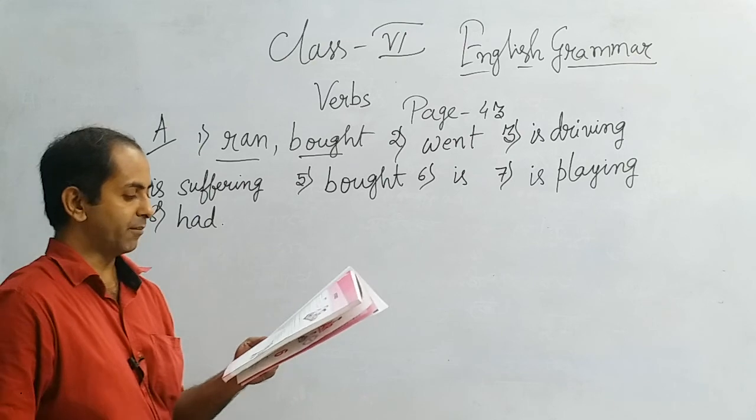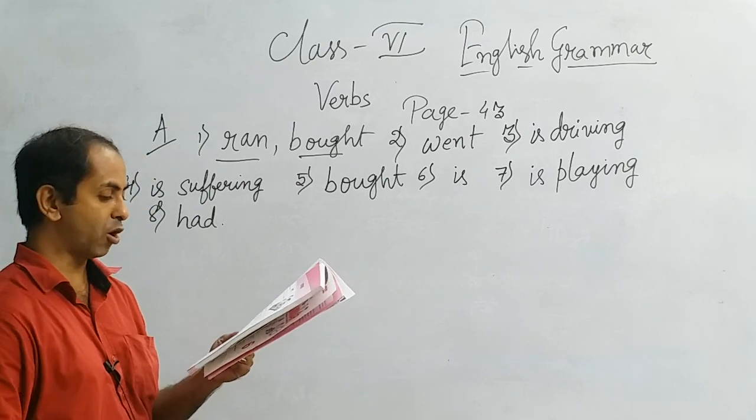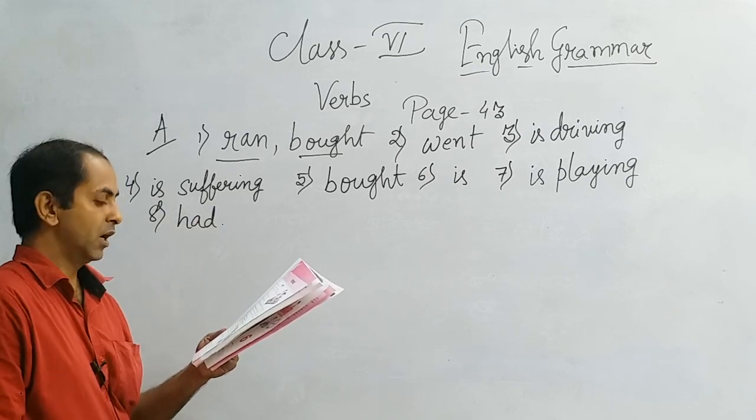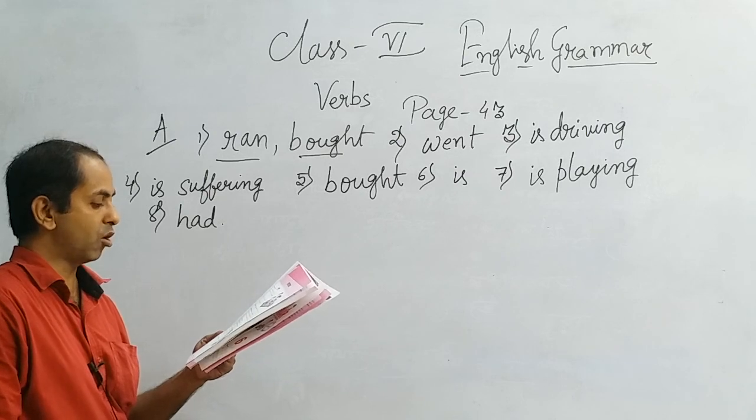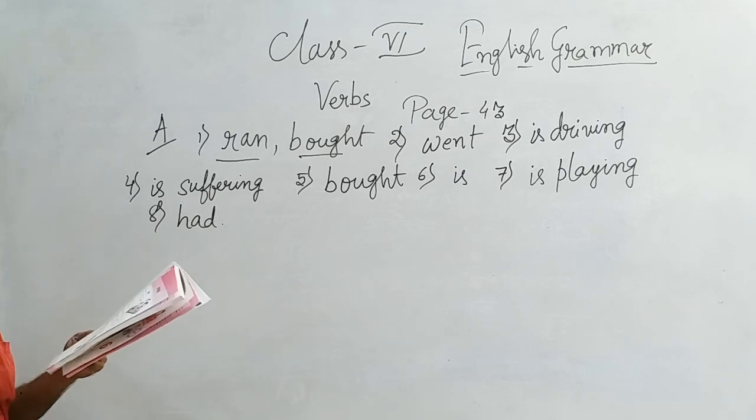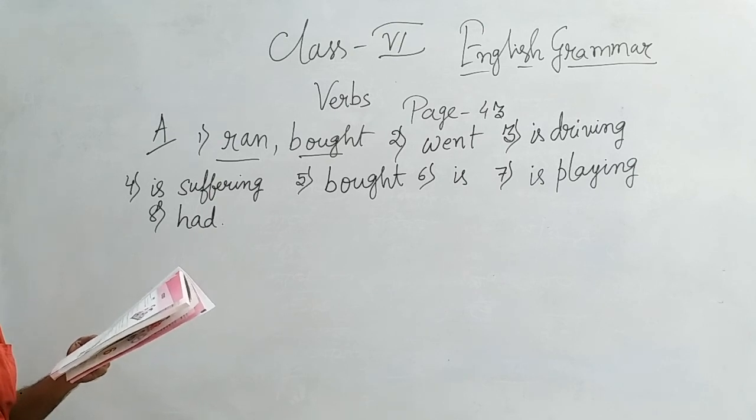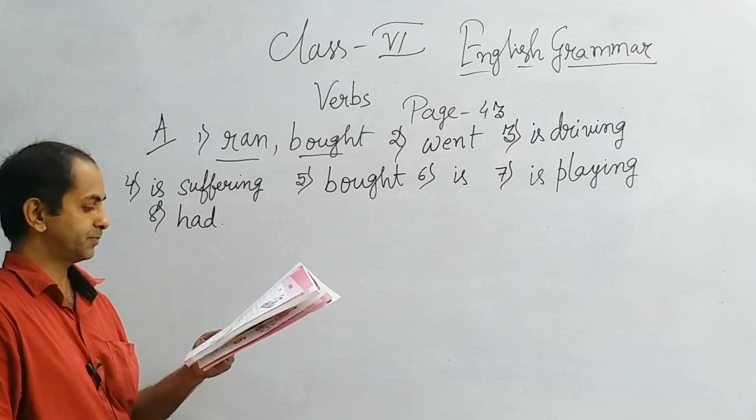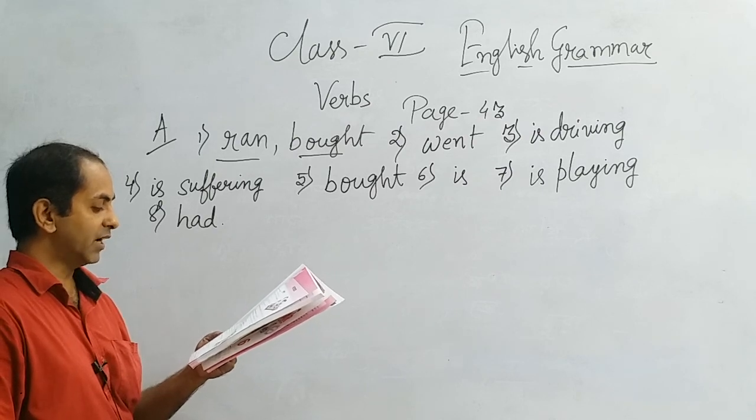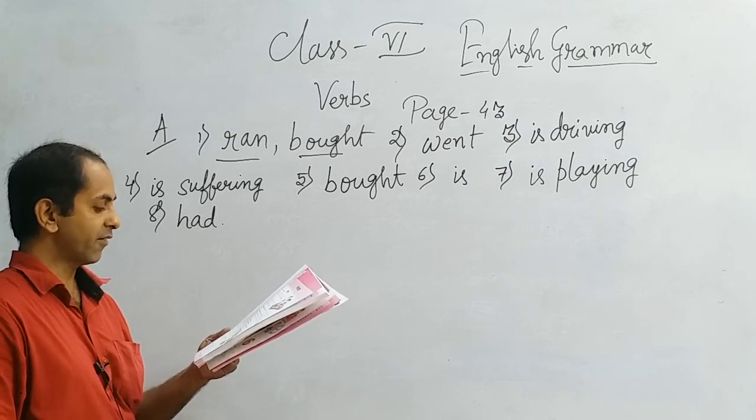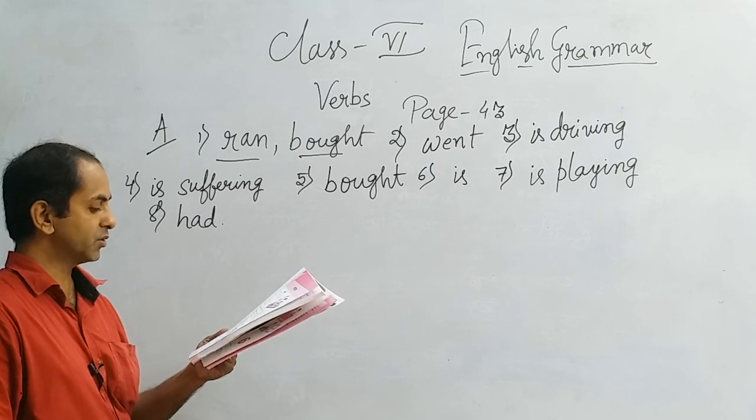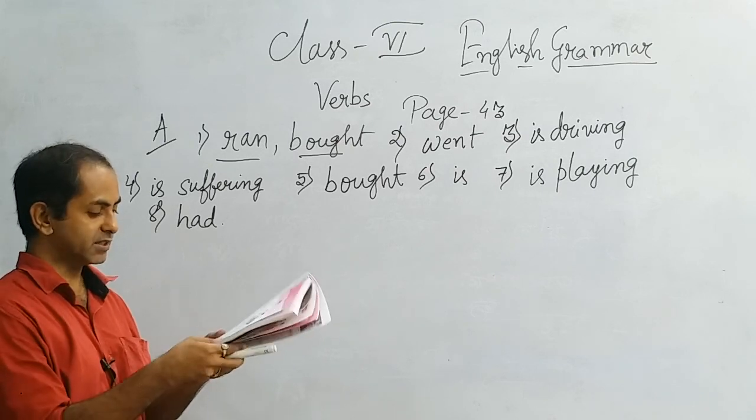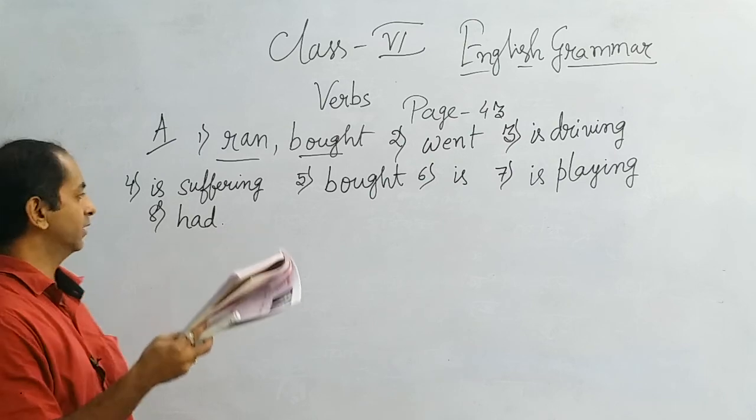Exercise number A review: Number 1 ran and bought, number 2 went, number 3 is driving, number 4 is suffering, number 5 bought, number 6 is, number 7 is playing, number 8 had.